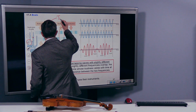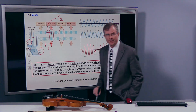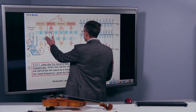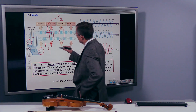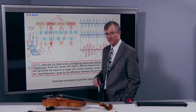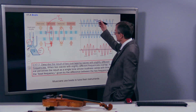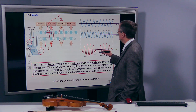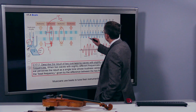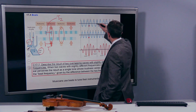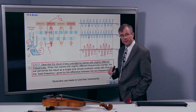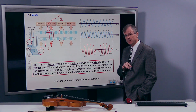Remember, the period is the time required for one complete cycle. So we're looking at what happens as a function of time here. Sometimes the peaks are meeting up, sometimes the valleys are meeting up. If you look at the actual pressure versus time, these are the two signals with slightly different frequencies.